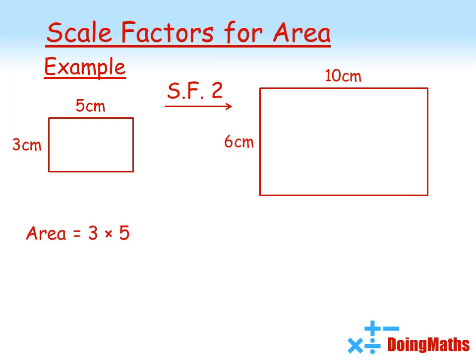Let's work out the areas. The area of the small rectangle, 3 times 5, is 15 square centimeters. The area of the large rectangle, 6 times 10, gives us 60 square centimeters. So it's not twice as big, it's actually 4 times as big. But why?